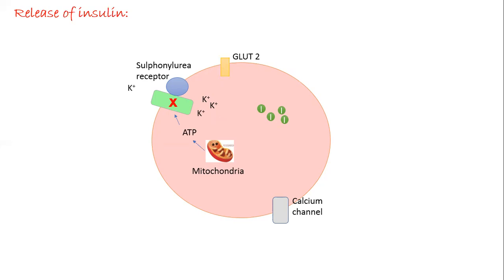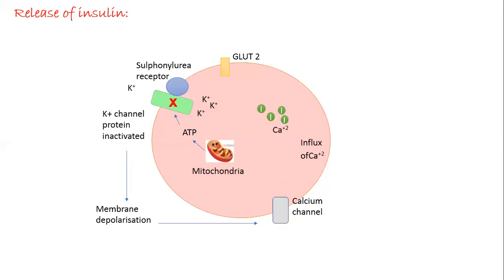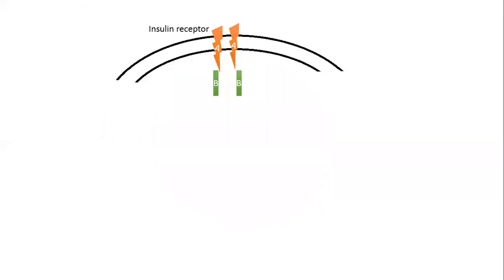Once ATP is produced, it blocks the sulfonylurea receptor responsible for expulsion of K+ ions. The K+ ions cannot move out of the cell, causing membrane depolarization. Due to this membrane depolarization, there is increased influx of calcium inside the cell. Once calcium influx increases, insulin is secreted out of the beta cells, and this insulin is responsible for glucose uptake into all other parts of the body.